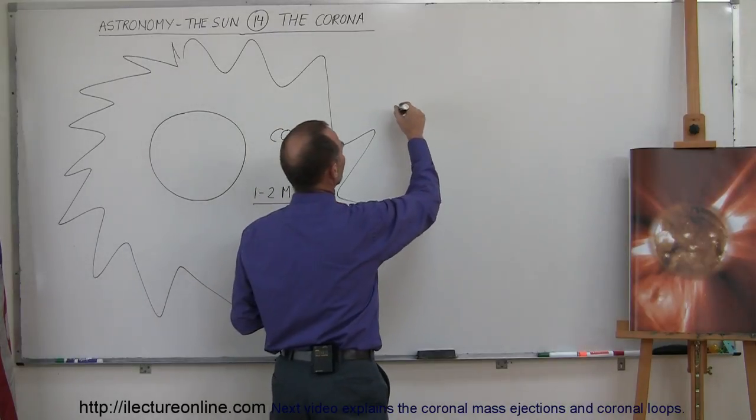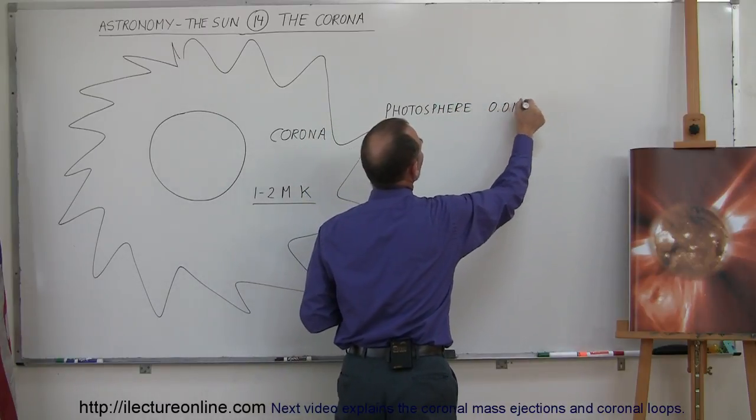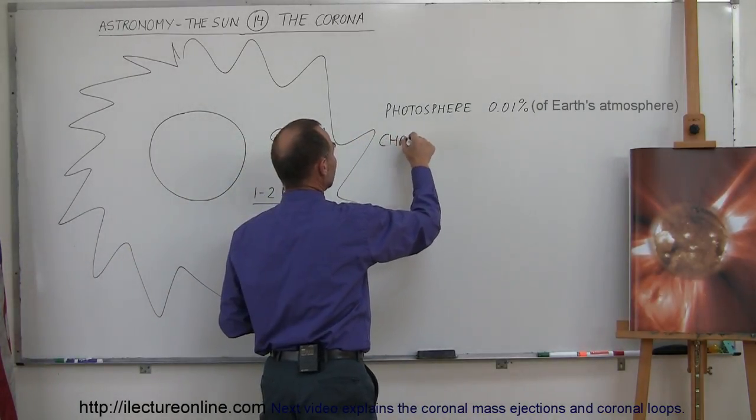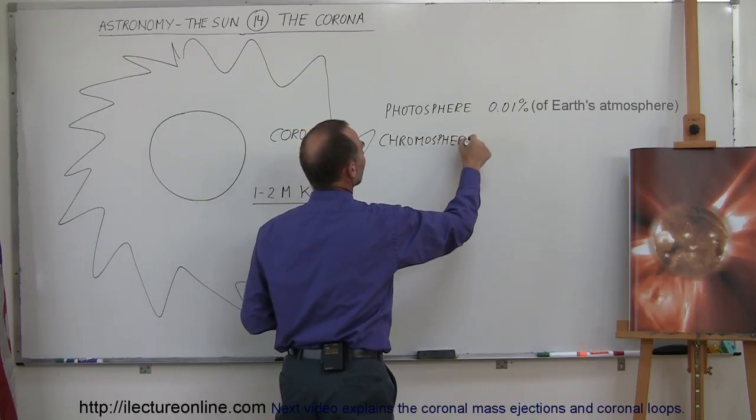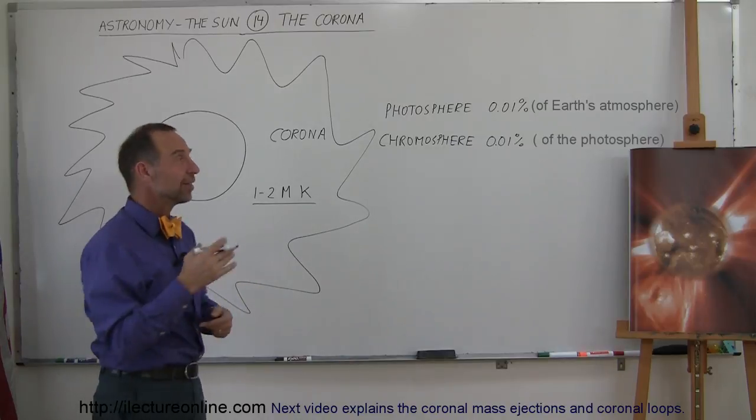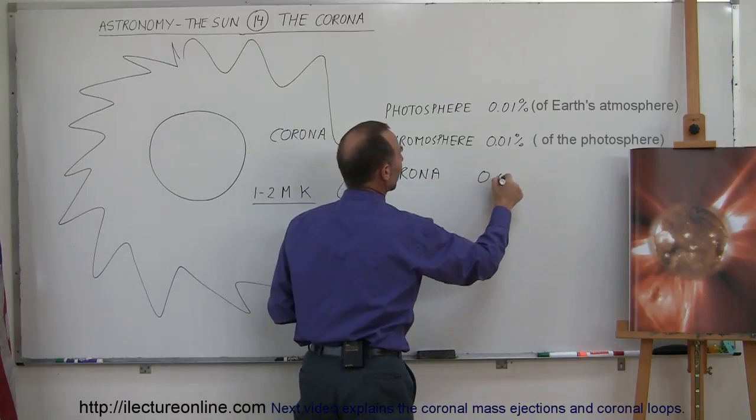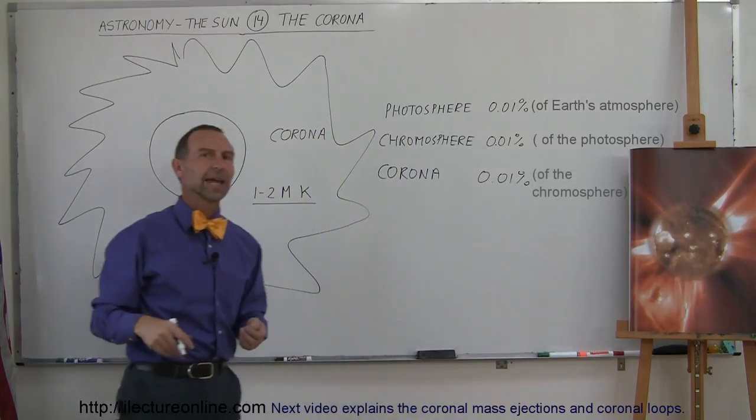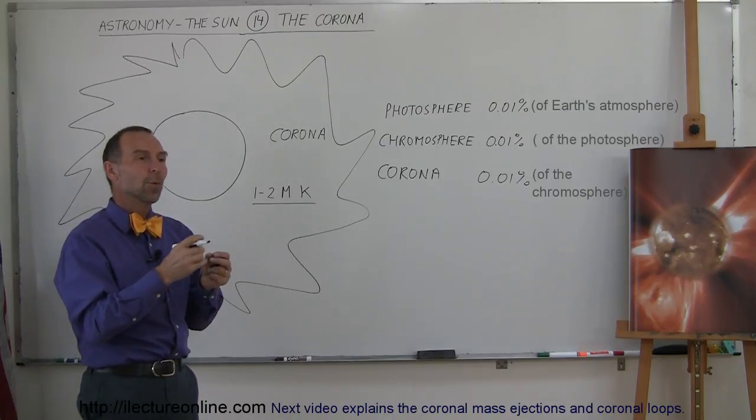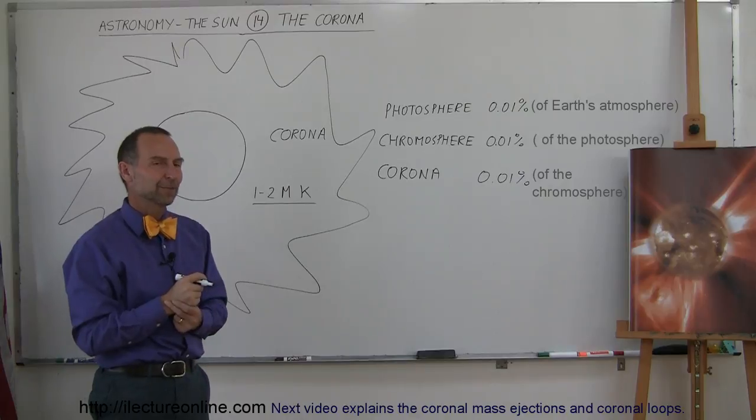So let's put things in perspective. Remember when I talked about the photosphere? For the photosphere, the density was about 0.01%, or 1/10,000, the density of the Earth's atmosphere. For the chromosphere, the chromosphere was roughly about 0.01% the density of the photosphere, which would make it 1/100 millionth the density of the Earth's atmosphere. And the corona, the density of the corona is about 0.01% the density of the chromosphere. So you add another 10,000 to that, it's about 1 trillionth the density of the Earth's atmosphere. One in a trillion. So for every one molecule or one atom in the corona, there's 10 trillion atoms in the Earth's atmosphere. So it's very, very rarefied.